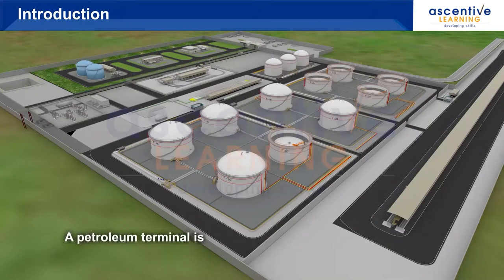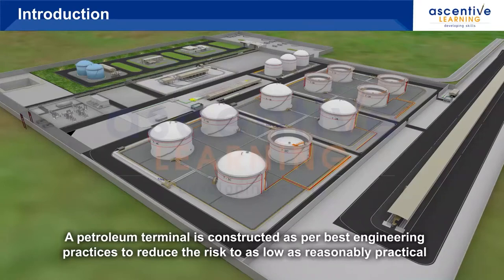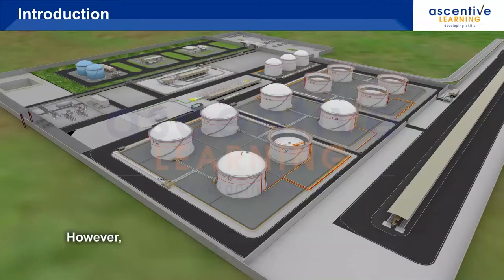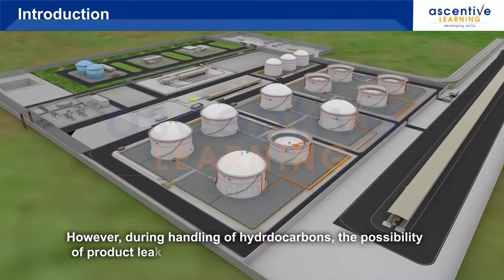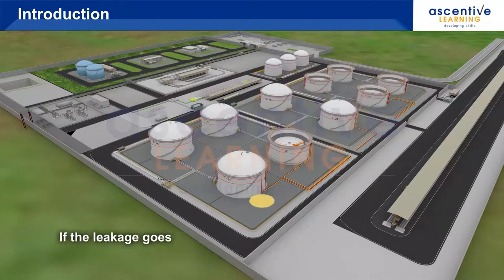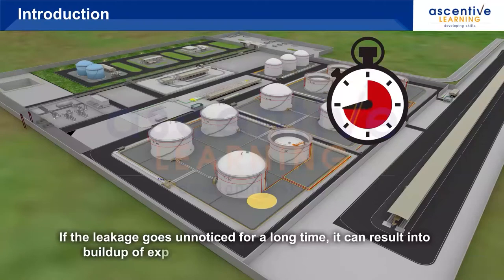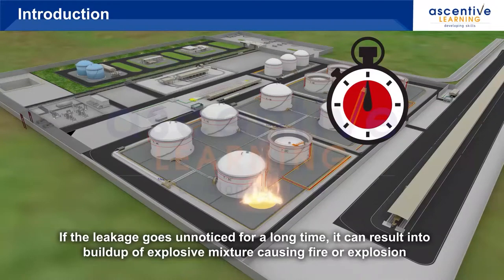A petroleum terminal is constructed as per the best engineering practices to minimize risks as far as reasonably practical. However, during handling of hydrocarbons, the possibility of product leaking out of containment cannot be ruled out. If the leakage goes unnoticed for a long time, it can result in a build-up of an explosive mixture which can cause a fire or explosion.